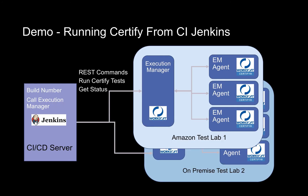In my demo I'm going to show running Certify from our Jenkins server. I have Jenkins on-site where my build numbers are generated. It calls Execution Manager via REST call, and I have basically two labs deployed — one in Amazon that tests Certify running against hosted apps like Concur or Hybris, and then I have on-premise labs also.